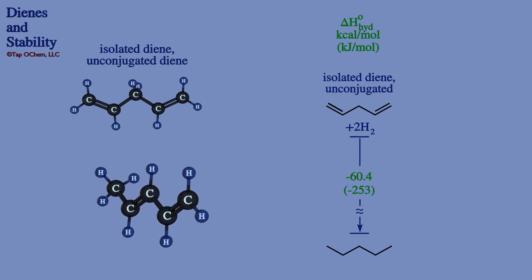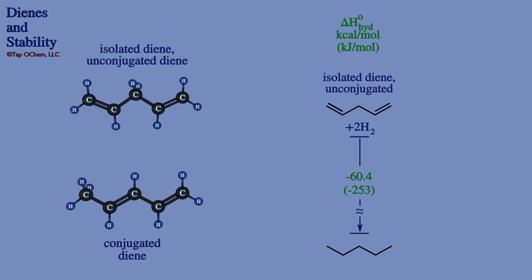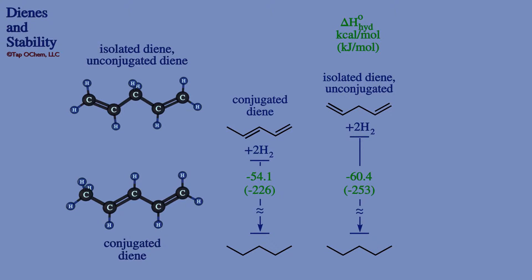Now let's bring in the conjugated diene 1,3-pentadiene. The hydrogenation of 1,3-pentadiene releases 54.1 kilocalories per mole of energy, significantly less than our isolated diene. As we see by its lower position on the screen, this conjugated diene is lower in energy than the isolated diene. This is a general trend — conjugated dienes are more stable and lower in energy compared to unconjugated dienes.